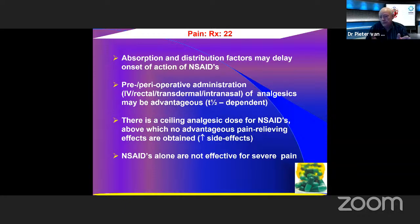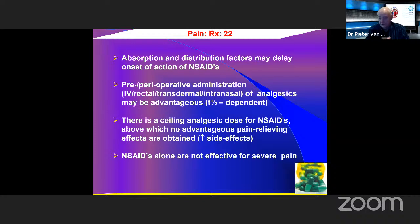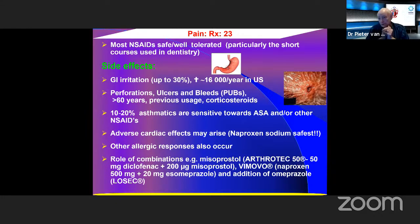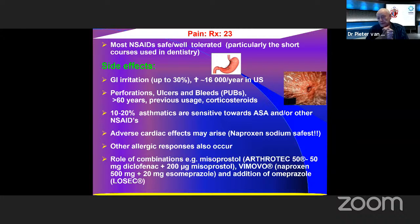Remember there is a ceiling analgesic dose for non-steroidals — you cannot keep increasing the dose because you will reach a point where increasing the dose gives no more pain relief, only more side effects. Non-steroidals alone are not effective for severe pain. They are generally well-tolerated, particularly the short-acting ones, but there is gastrointestinal irritation — up to 30% of people have irritation of their stomach mucosa — and they cause about 16,000 deaths per year in the US from overdose, gastric ulcers, and bleeding.